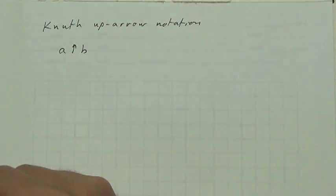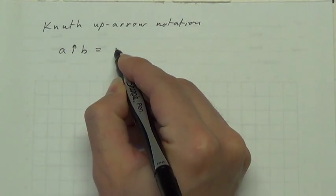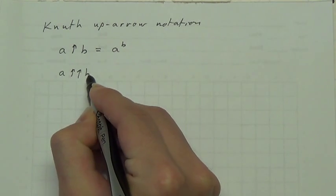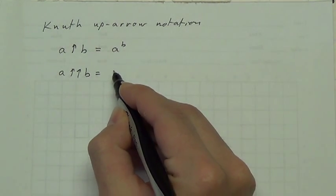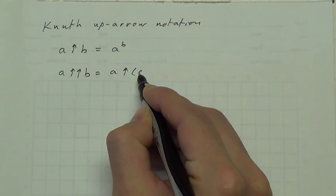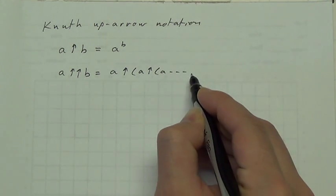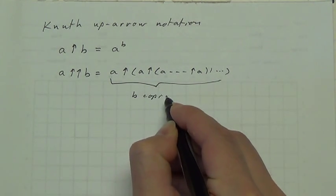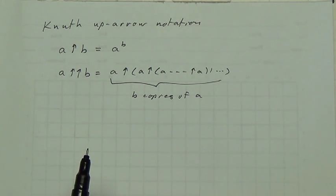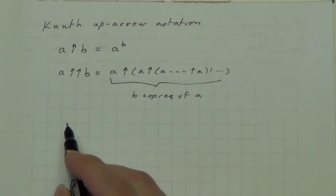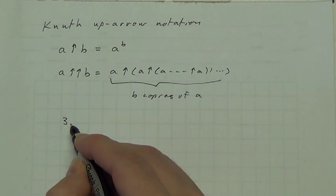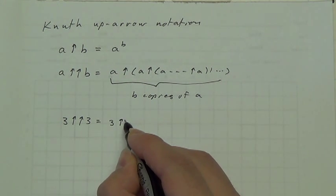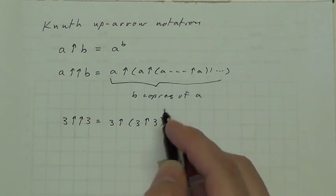In general, A up-arrow B is nothing unusual — it's just A raised to the B. But A double up-arrow B means take B copies of A and up-arrow them together. An up-arrow is just an exponent.